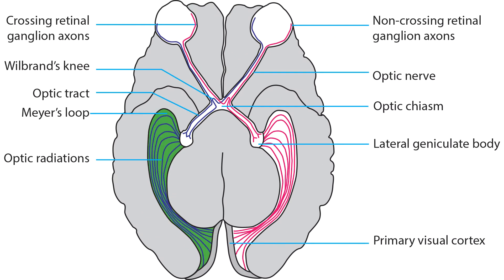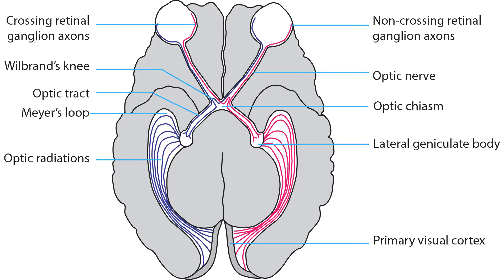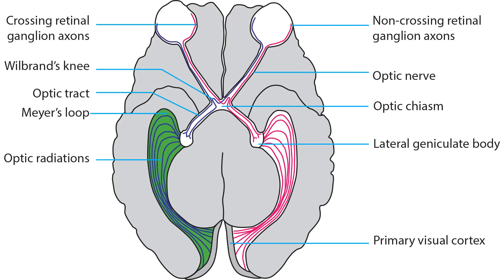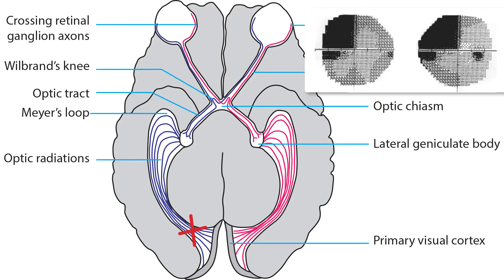As they head posteriorly, the axons of Myers loop eventually join up with the superior axons exiting from the lateral geniculate body. These optic radiation axons travel along the outer border of the lateral ventricle in the temporal and parietal lobes. As they proceed farther posteriorly, axons originating from corresponding retinal points of the two eyes come to lie adjacent to one another, so damage to the posterior optic radiations causes homonymous defects that resemble each other in size and shape — called congruous homonymous hemianopia.